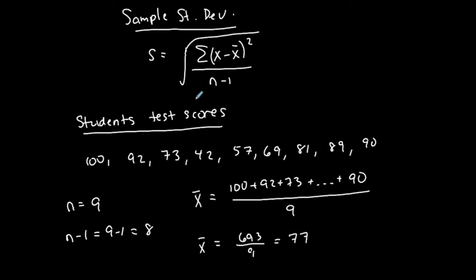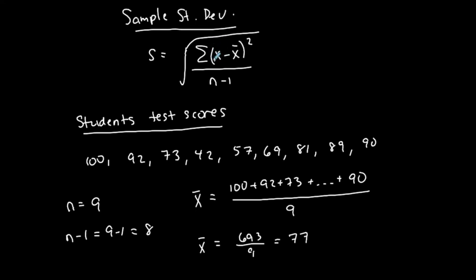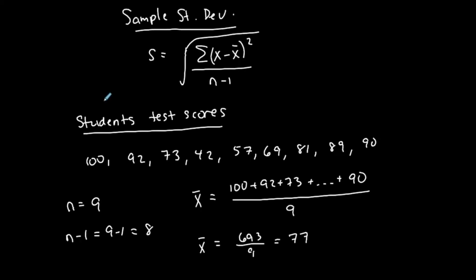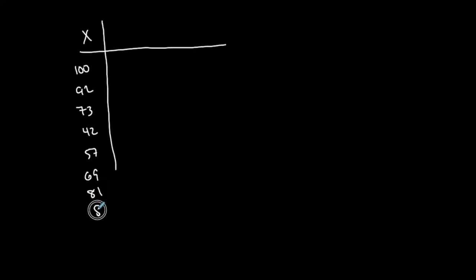Now what I like to do to simplify this is create a table. So I'm going to create a table with all the values, which is represented by x. So x in this formula represents each of the data values. So because I have nine data values, that means I have nine x's. This is a variable. So I'm going to make myself a table with all of my x's: 100, 92, 73, 42, 57, 69, 81, 89, and 90. This is going to make my formula a little bit easier.